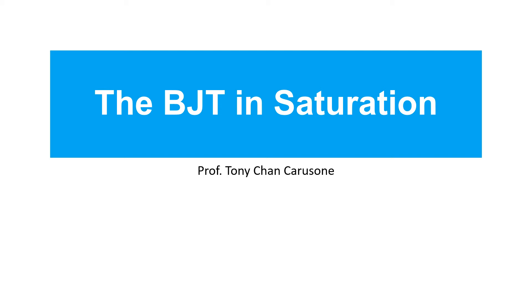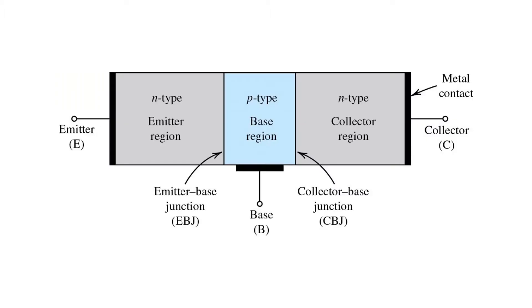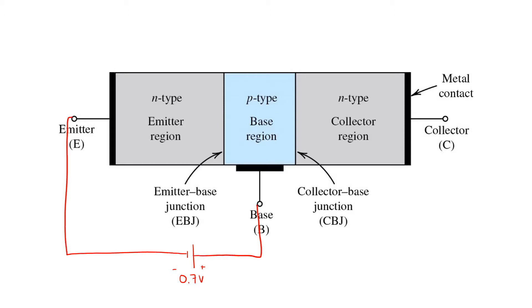In this video, we'll talk about the BJT operating in saturation mode. Here we have the NPN BJT. You may recall that in order to turn this transistor on, we have to forward bias the emitter-base junction. For a silicon BJT, that may imply a forward voltage of somewhere around 0.7 volts to forward bias that PN junction. For operation in active mode, we need to reverse bias the collector-base junction.